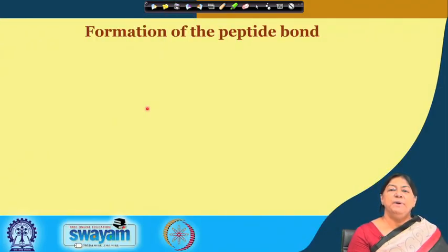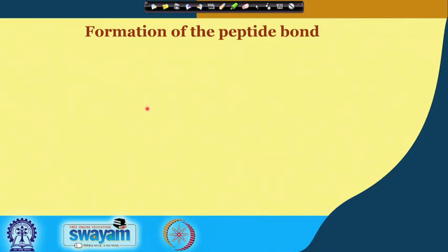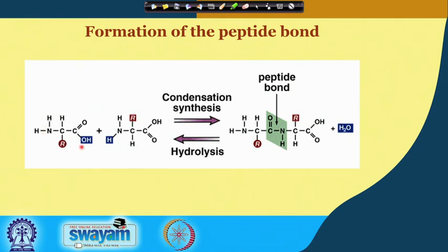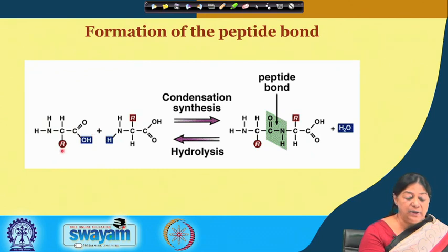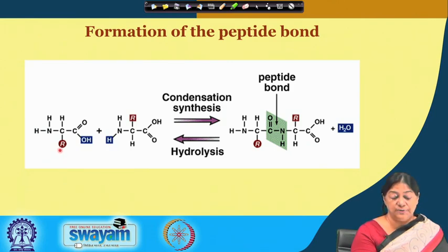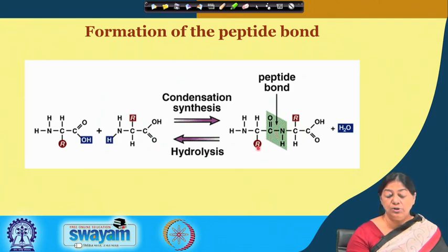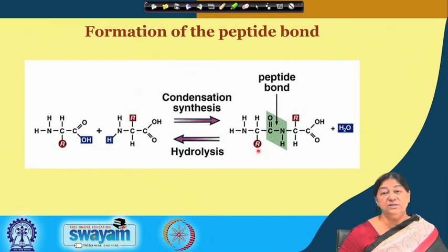We are now going to look at the formation of the peptide bond. Two amino acids come together to form a peptide bond. One amino acid has an amino group, carboxylic group, and R group. A second amino acid has a distinct R group. Through condensation, we lose a molecule of water, creating the peptide bond. We will look at the characteristics of the peptide bond and of specific R groups and why they can be located at specific parts in a three-dimensional folded protein.